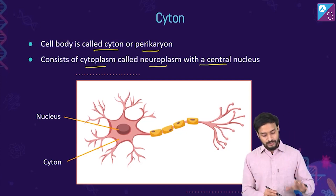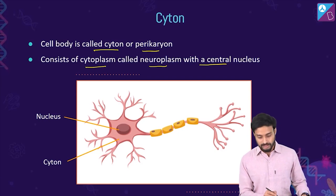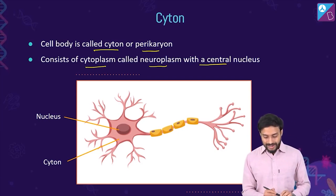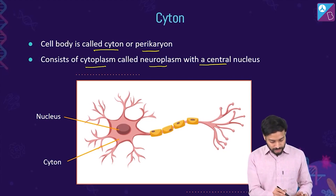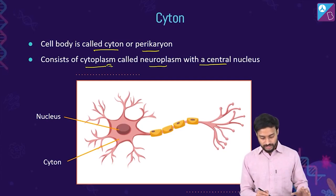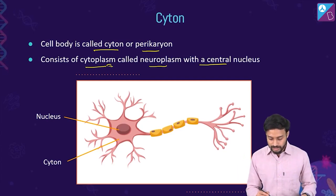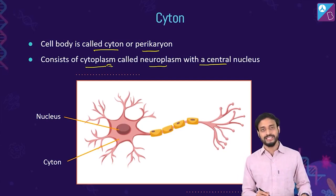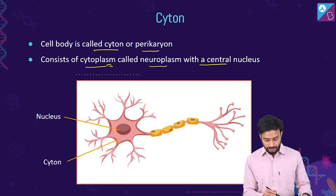The neuroplasm of the cyton contains the nucleus, mitochondria, Golgi bodies, endoplasmic reticulum, and lysosomes.